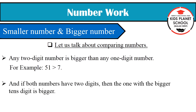And, if both numbers have two digits, then the one with bigger tens digit is bigger. For example, here 34 and 68, both are two digit numbers. So, to find which number is bigger and which number is smaller, we will compare the digits which are at the tens place in both the numbers. In 34, 3 is at the tens place, and in 68, 6 is at the tens place. Which is the bigger number, 3 or 6? Yes, 6. So, it means 68 is the bigger number.